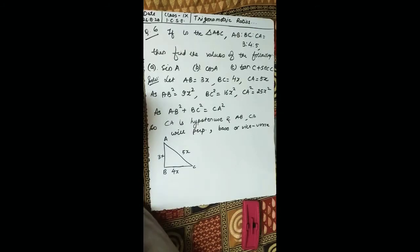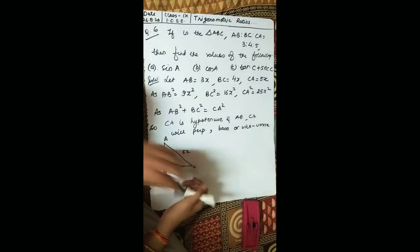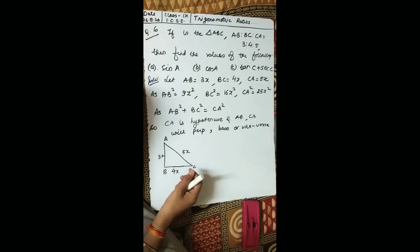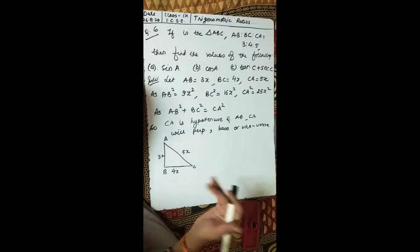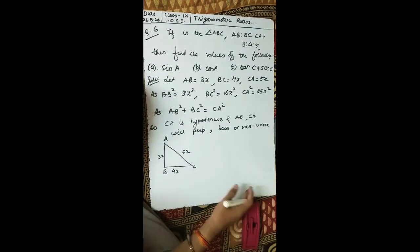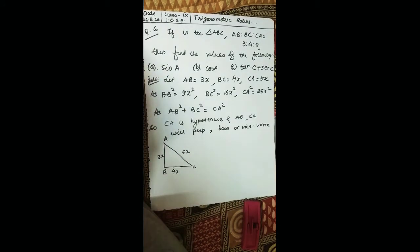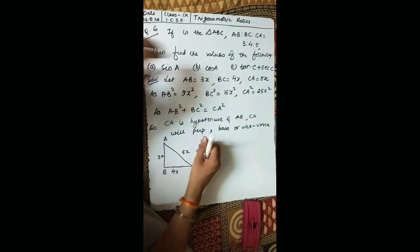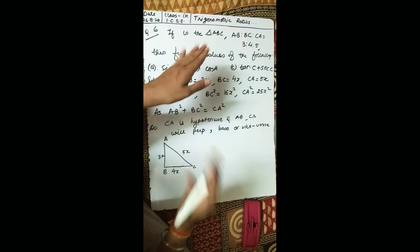Now let's move to the sixth question. I'm skipping questions four and five because if you understood the first three, those should be straightforward — give them a try and ask if needed. Question six says: in triangle ABC, AB to BC to CA is in the ratio 3 to 4 to 5. The triangle is not explicitly stated to be right-angled.